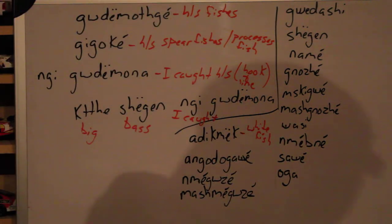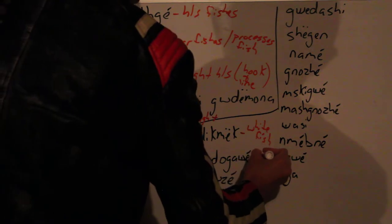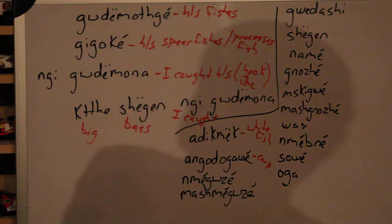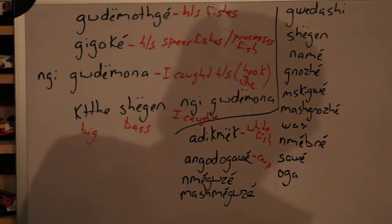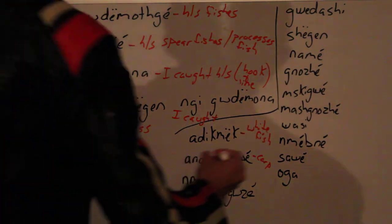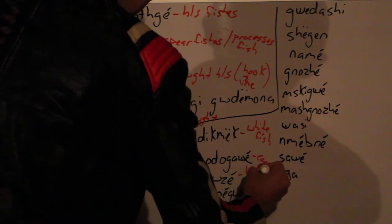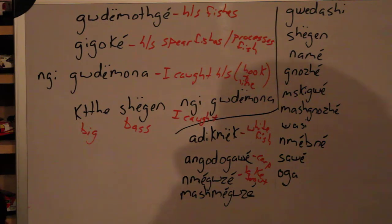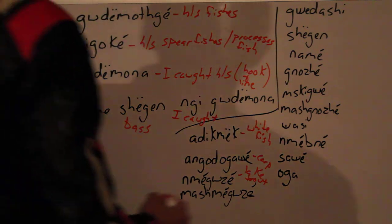Another type of fish you may catch in this area is angodogáwe. Angodogáwe is a carp. Next one we have is namagwazé — namagwazé is a lake trout. Next we have mosh magwazé — mosh magwazé would be your brook trout.